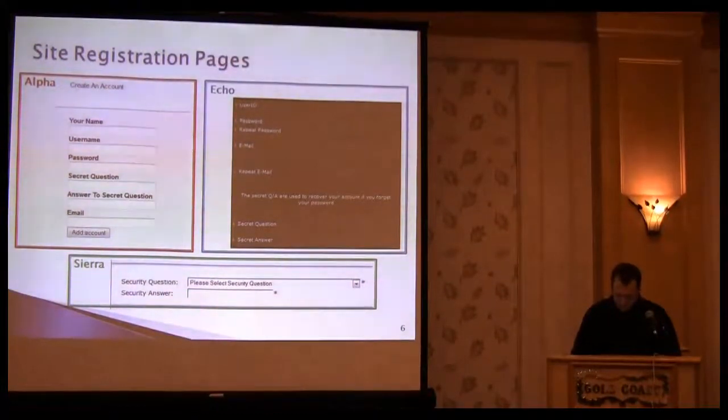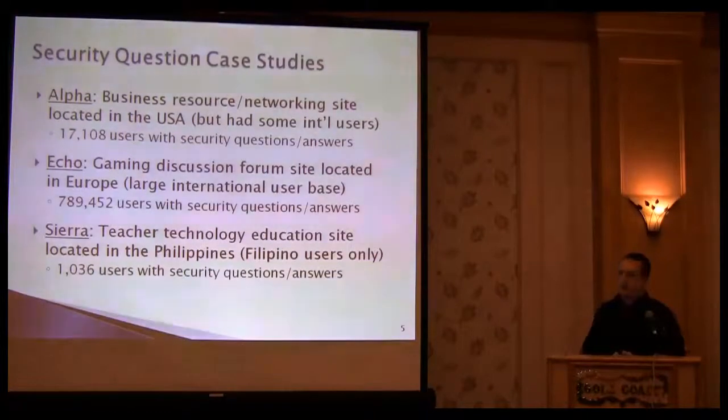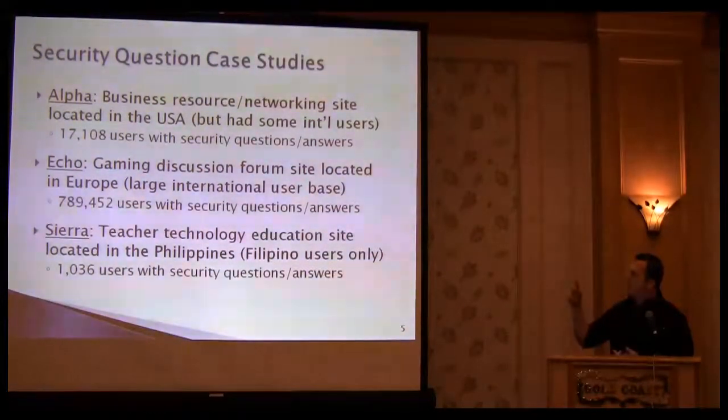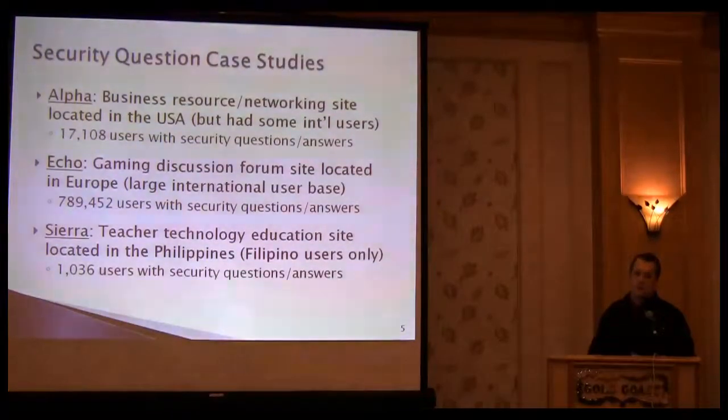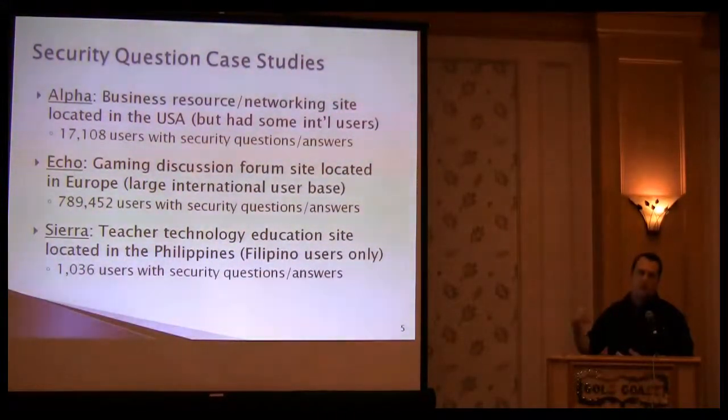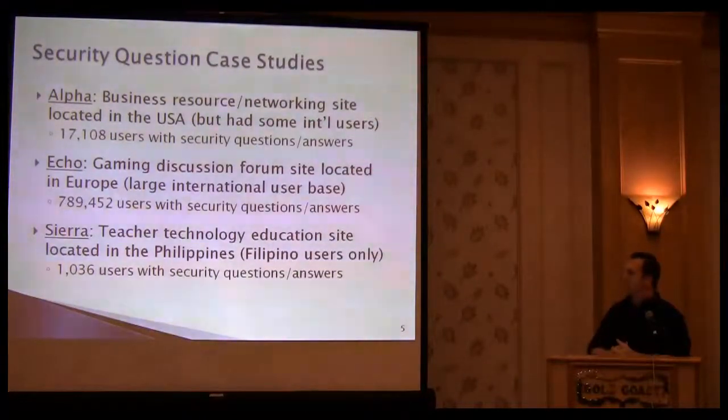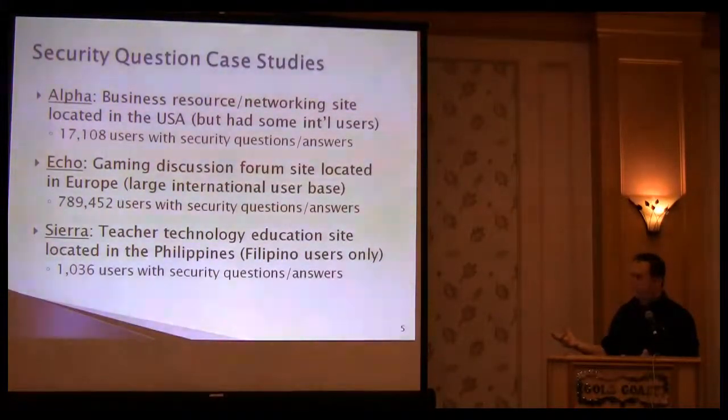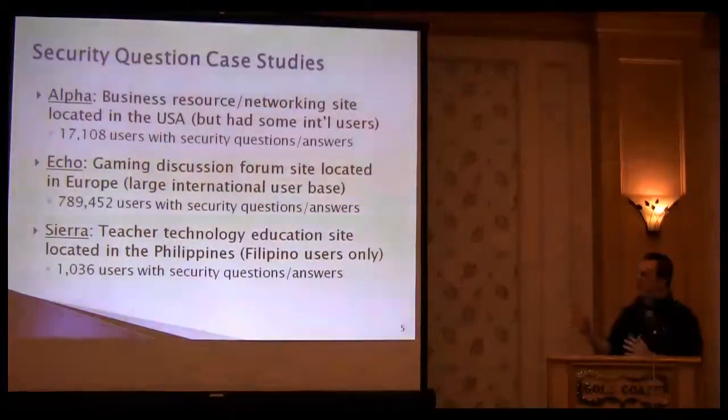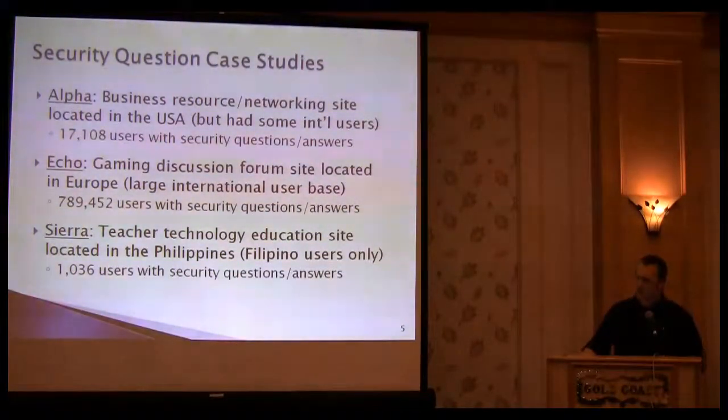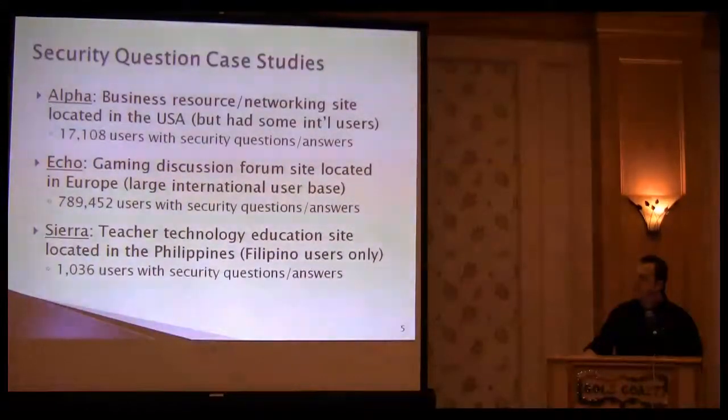So what was in these databases? In Alpha and Echo's case, it was pretty much name, username, email address, password, security question, security answer. In Sierra's case, they had more information including greetings or title, education level, and birthday—some interesting tidbits I looked at.